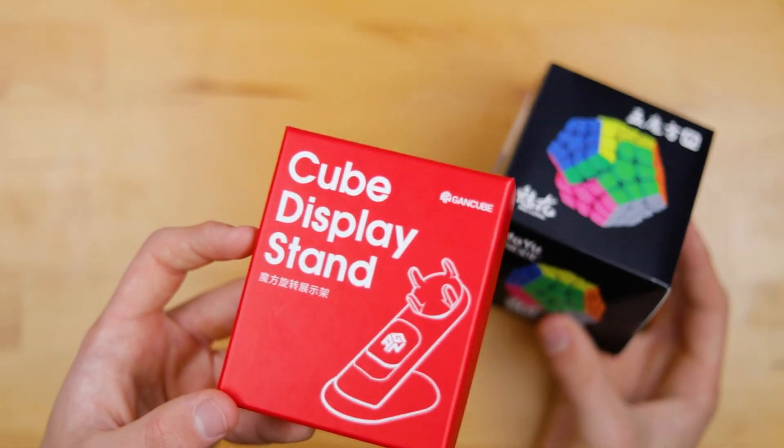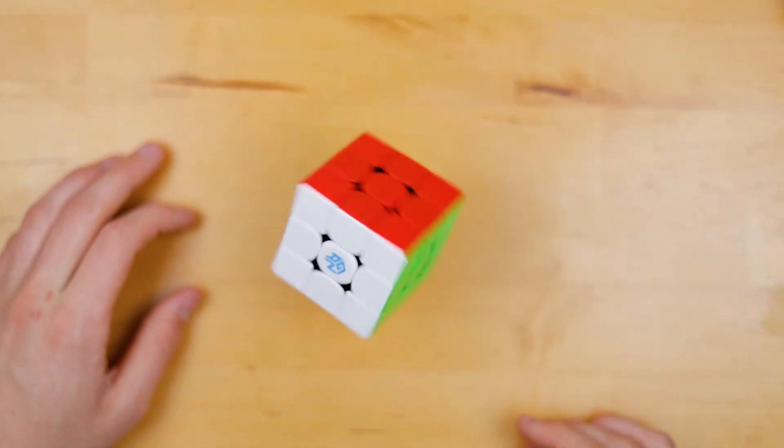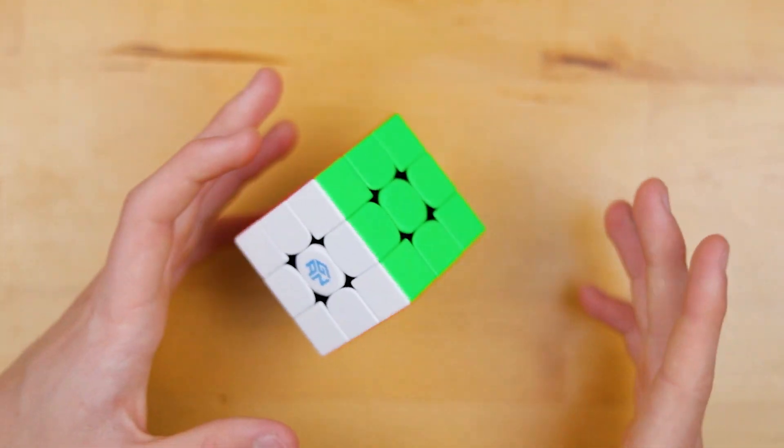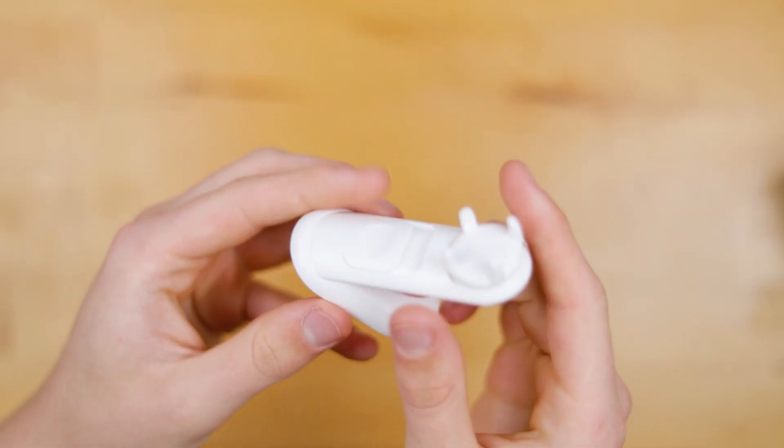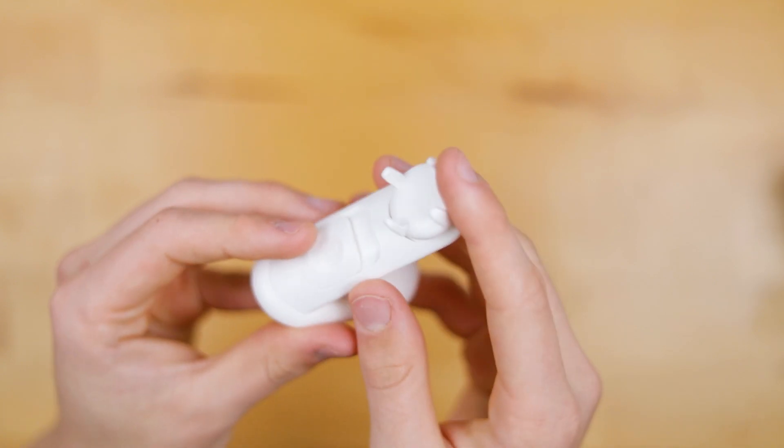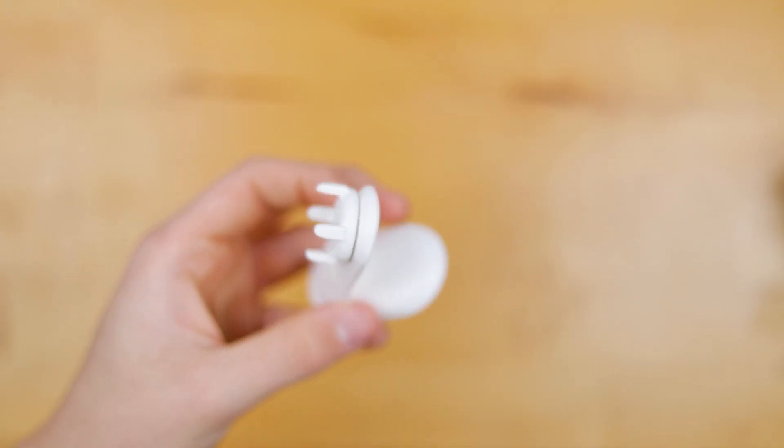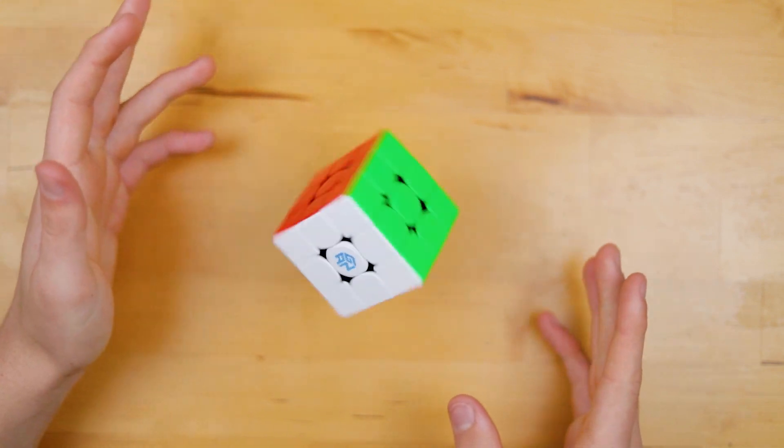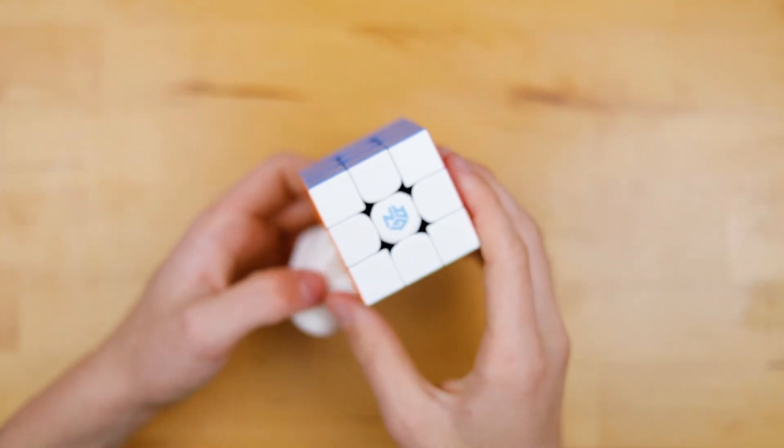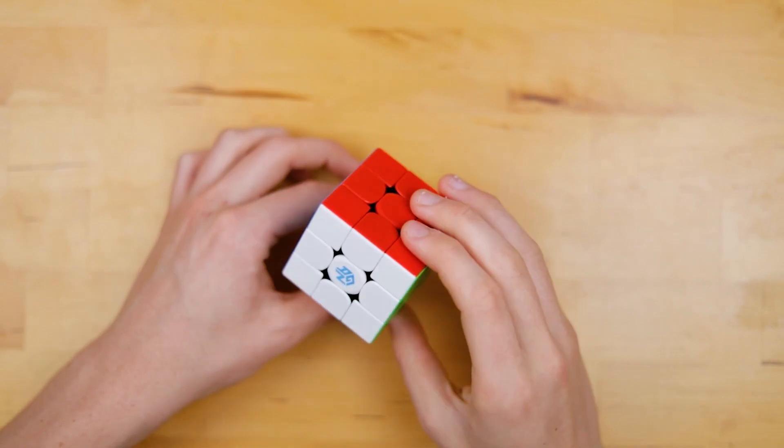Now I want to get into the first couple of things in this package which is the Meilong megaminx and GAN's new cube display stand. That is so cool. So we just have these two parts and you want to slide this in here and it makes this little contraption that spins. Also this little dial changes it from a really smooth spin or you can go like this and it'll have more of a mechanical feel.